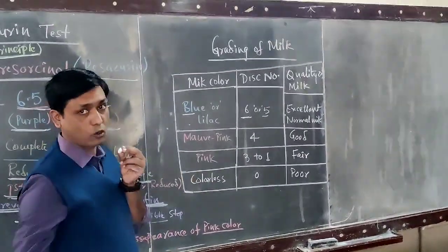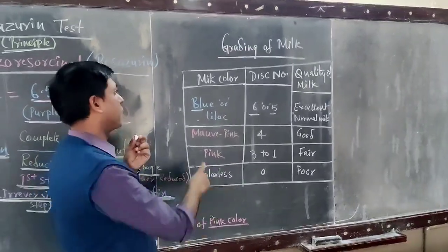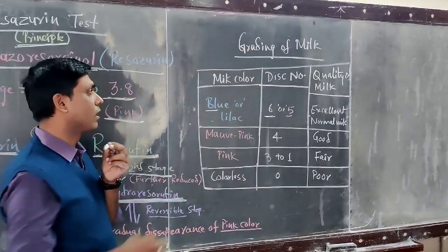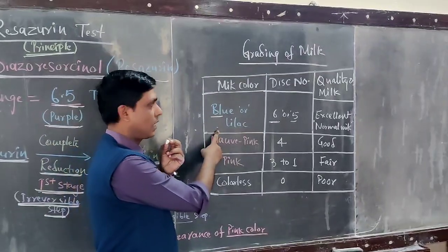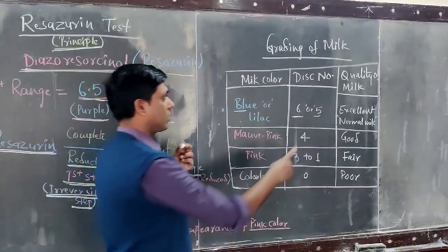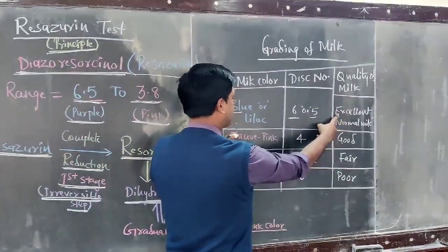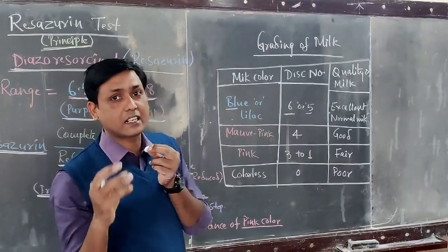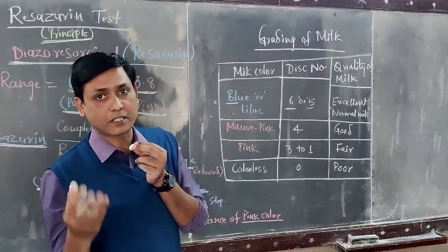After one hour, if the milk color is blue or lilac, this indicates excellent quality milk. This means there are fewer pathogenic microorganisms present, indicating less contamination in the milk.